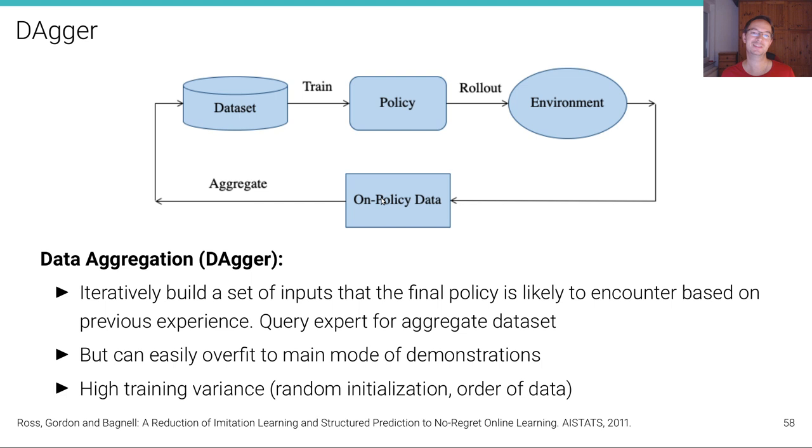And we get new on policy data that we label with the expert. And then aggregate to the original data set. So we do this aggregation not inside the training loop. But we do it once in a while. For a few steps. But still we have to train. Again we have to query the expert for this on policy data. In other words, we iteratively build a set of inputs that the final policy is likely to encounter based on previous experience. And we query the expert for the aggregate data set.